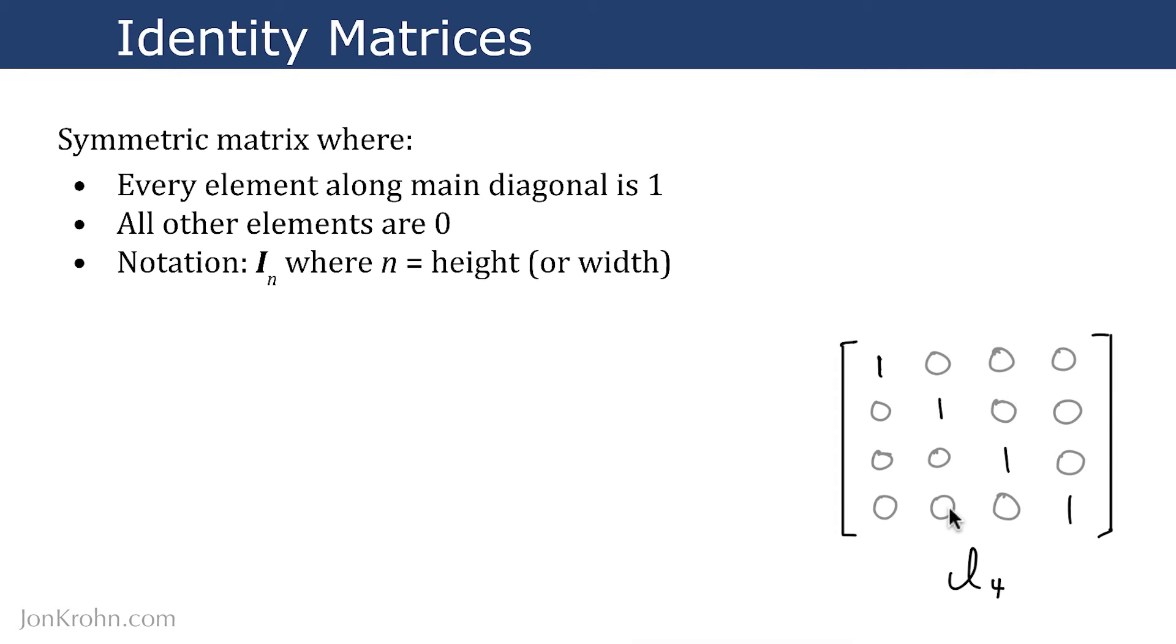We can annotate such an identity matrix with I, and it has matrix notation, so it's capitalized, italicized, and bold. Then you put as a subscript the number of rows or columns. In this case, identity matrix I4 has four rows, four columns, and its main diagonal is four elements long.